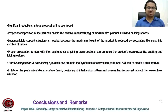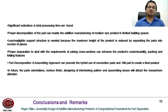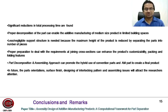The concluding remarks are that significant reductions in total processing time are found for different shape and geometry objects. Proper decomposition of parts can enable additive manufacturing of medium sized products in limited building space. Less or negligible support structure is needed because the maximum height of the product is reduced by separating it into pieces. Proper preparation of joining cross-sections can enhance the product's customizability, packing, and folding features. Part decomposition and assembling approach can also promote hybrid use of conventional and additive manufacturing parts. In future, part orientations, surface finish, designing of interlocking patterns, and assembling issues will attract researchers' attention.